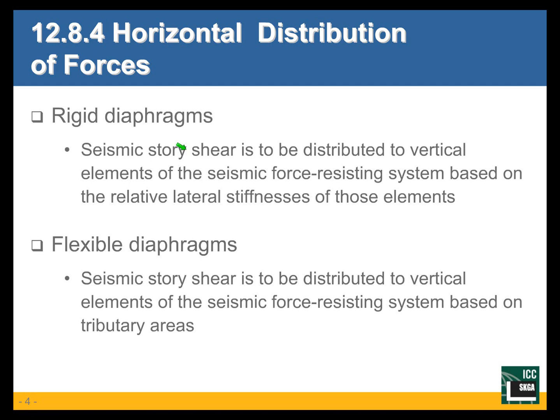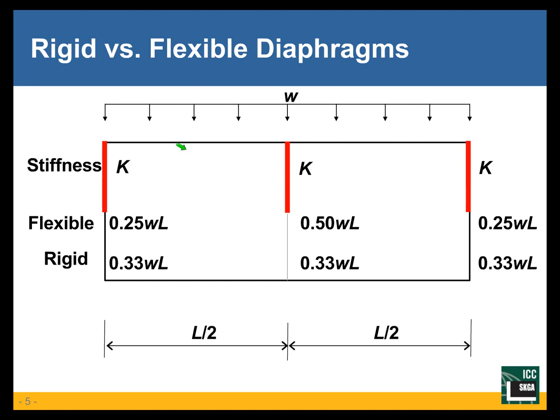This is how the flexibility of the diaphragm makes a huge difference. To give you a very simple example: this is a diaphragm subjected to lateral forces due to earthquakes. The diaphragm is supported by three shear walls, all of the same lateral stiffness k. If the lateral stiffnesses of the three shear walls are the same and the diaphragm is rigid, then the total lateral force would be distributed to the three shear walls in proportion to their relative lateral rigidity — each getting one-third of the total load.